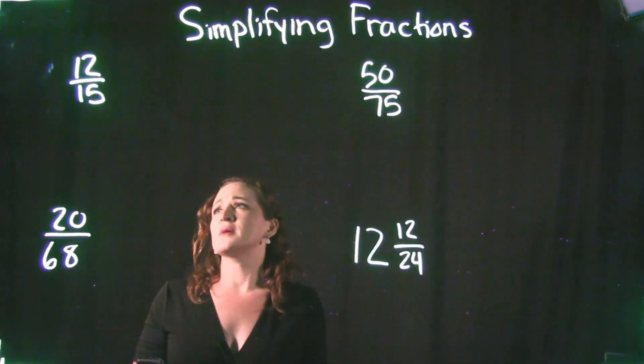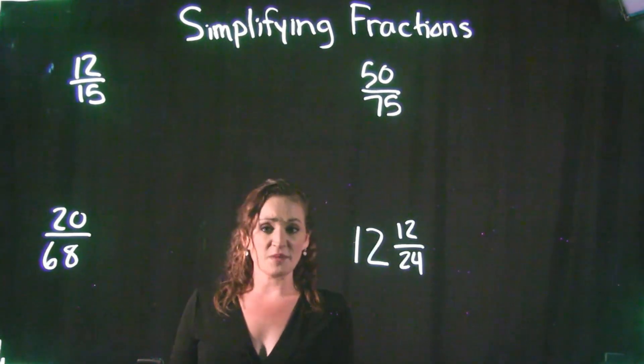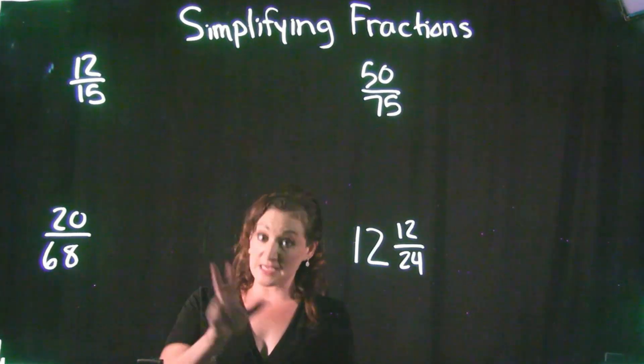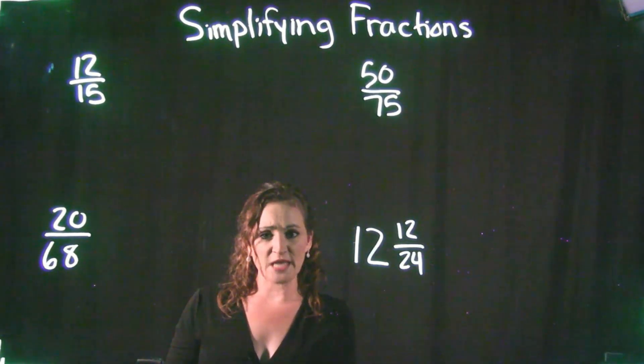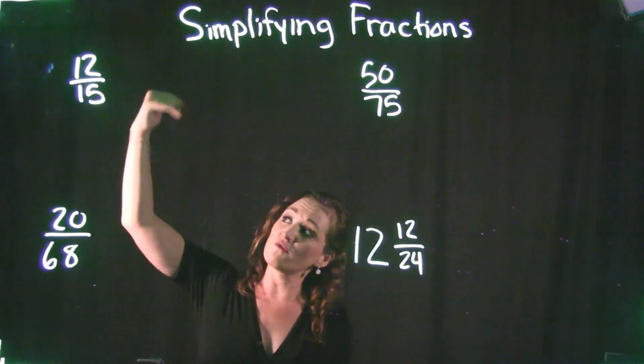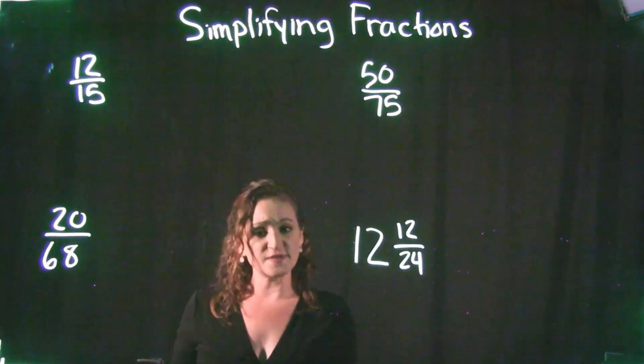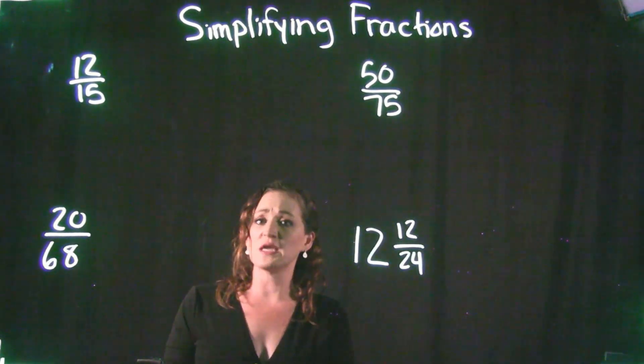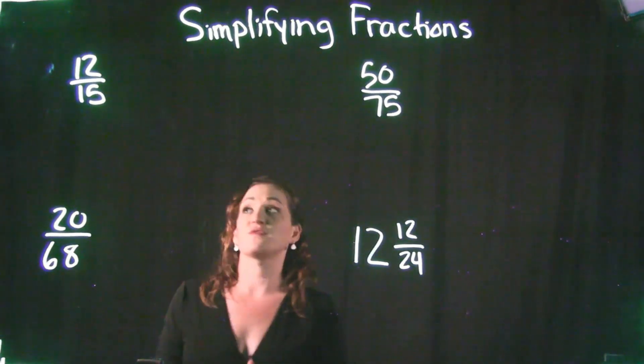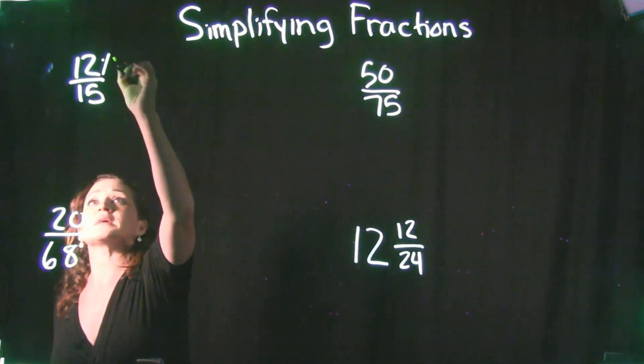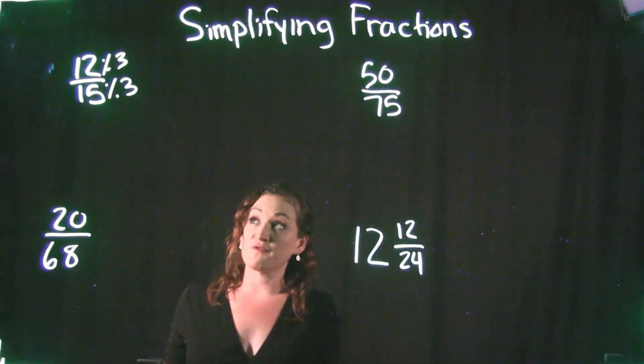For example, when I'm looking at the number 12 and the number 15, the first number that comes into my mind that can go into both of those is the number 3. If I think about the number 3 and go through my times tables, 3, 6, 9, 12, 15, 18, and so on, both 12 and 15 are a multiple of 3. So that means that I can divide out a 3 from both of them. So what I'm going to do is I'm going to divide out a 3 from the numerator and I'm going to divide out a 3 from the denominator.